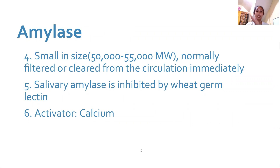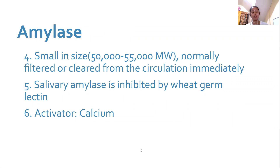Salivary amylase can be selectively removed. If you want to inhibit salivary amylase and only measure pancreatic amylase, one way is by adding wheat germ lectin. Our activator for amylase is calcium.